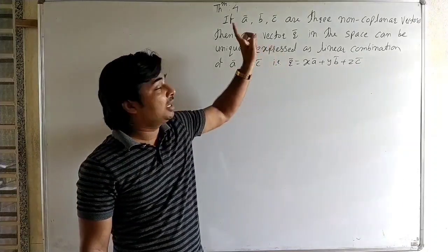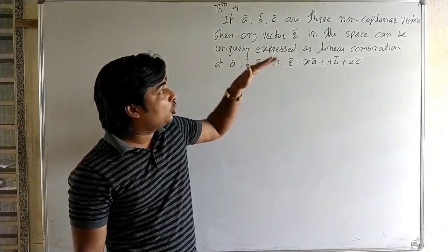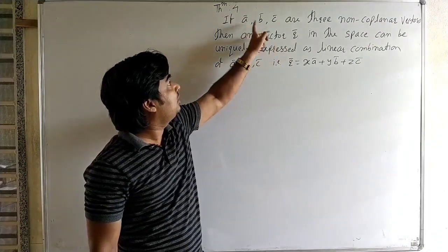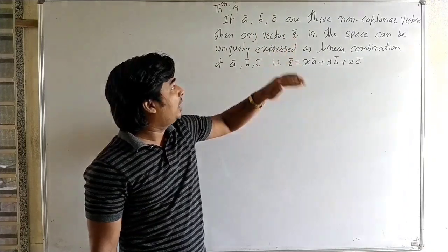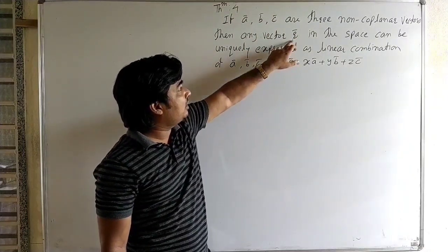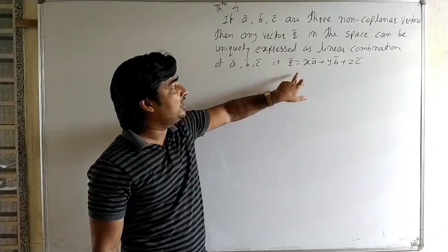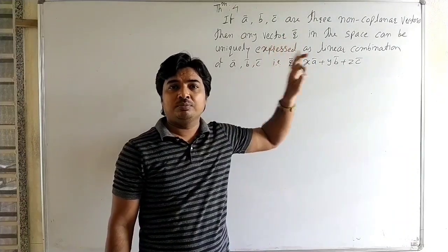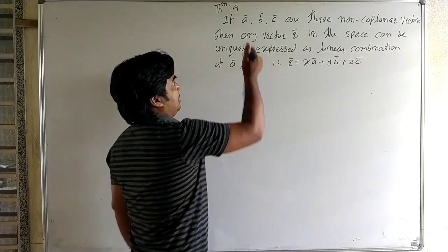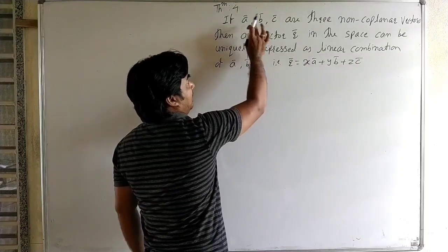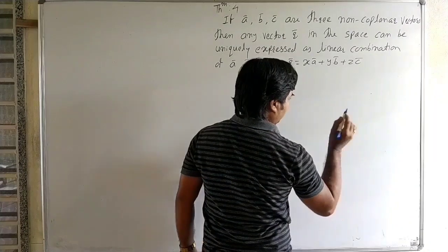Here a-bar, b-bar, and c-bar are non-coplanar vectors, therefore there are three planes for a-bar, b-bar, and c-bar, and we can prove that any vector r-bar in the space can be expressed as a linear combination of a-bar, b-bar, and c-bar. Now in three dimensions, a-bar, b-bar, and c-bar are non-coplanar — that is, three planes.